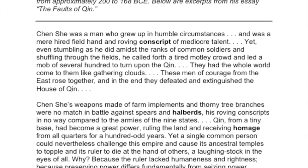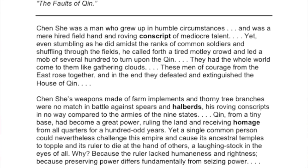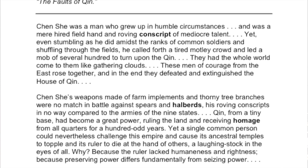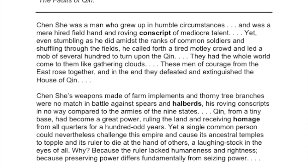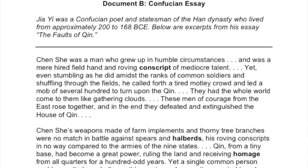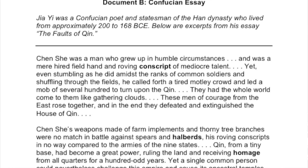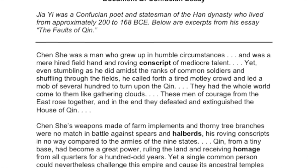Chen Shi was a man who grew up in humble circumstances and was a mere hired field hand and roving conscript of mediocre talent. A conscript is someone required to join the military, so he was in the military, traveled all over China, and mediocre means just below average — not great, not terrible. Yet shuffling through the fields, he called forth a tired, motley crowd and led a mob of several hundred to turn upon the Qin. They had the whole world come to them like gathering clouds — these men of courage from the east rose together and in the end defeated and extinguished the house of Qin.